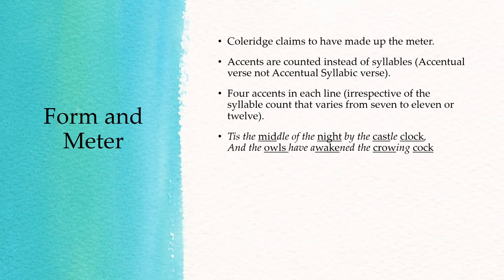Here is an example, the opening line of part one: 'It is the middle of the night by the castle clock' and 'And the owls have awakened the crowing cock.' Both lines have different numbers of syllables but four accents. In the first line mid, night, cast, and clock are stressed. In the second line owls, wake, crow, and cock are stressed. So we have four stresses in each line instead of uniform syllable count.